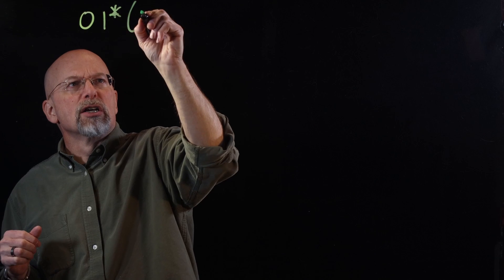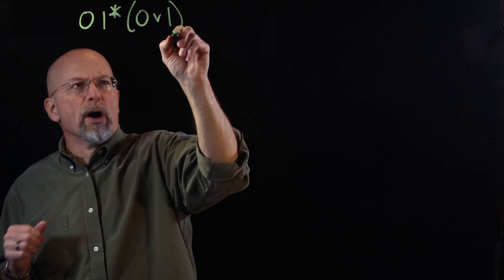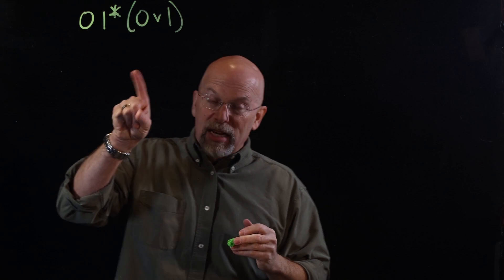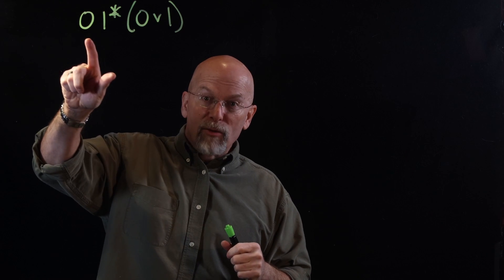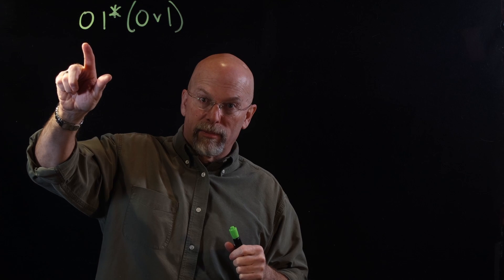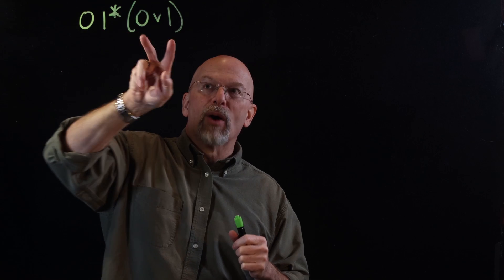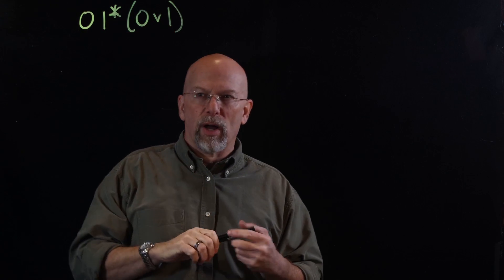A couple of episodes ago, we presented a non-deterministic finite automata that was supposed to detect, from the binary alphabet, the regular expression zero, one-star, zero or one. And so the regular set generated from that regular expression — every element had to start with a zero.